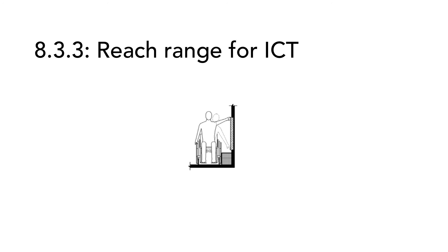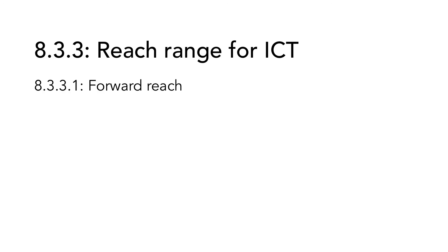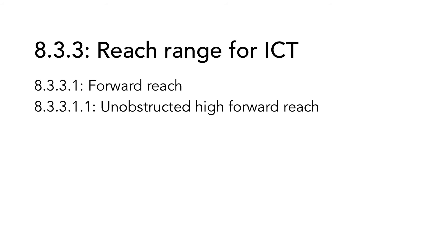After this comes the reach range for ICT hardware. The illustrations and examples in the standard are mostly based on users in a wheelchair, but these requirements are also important for short users and users with other kinds of motor impairments. In this section there are requirements for forward reach and side reach. Both of these can have different conditions, like high or low reach, obstructed or unobstructed reach, and floor clearance. If there is nothing blocking the user from reaching the ICT, that is called unobstructed reach. There are two different requirements concerning forward reach: one regarding high level and the other covering low level.